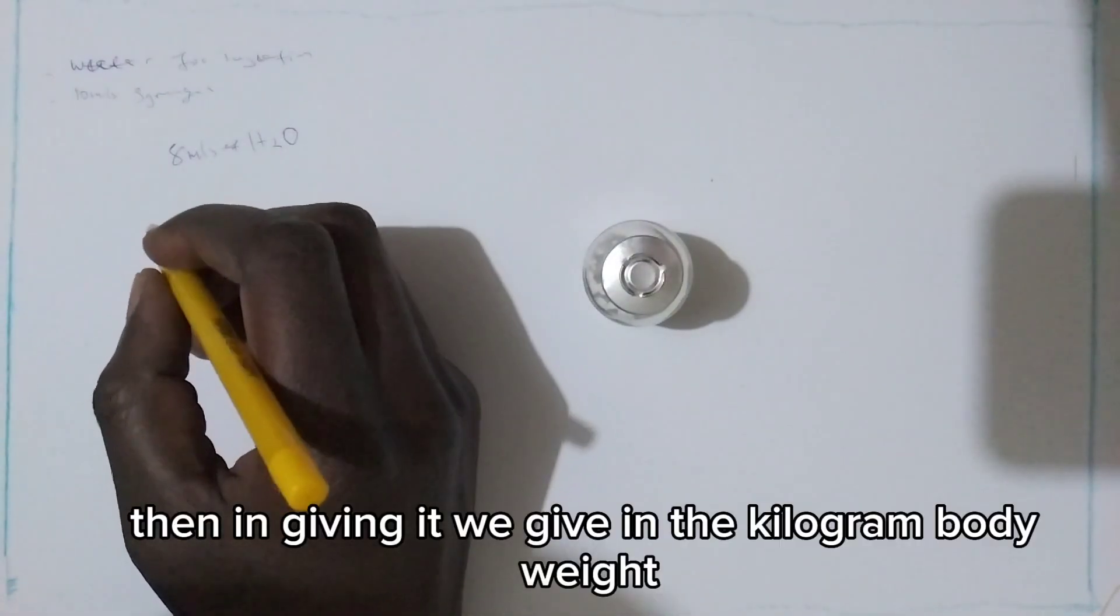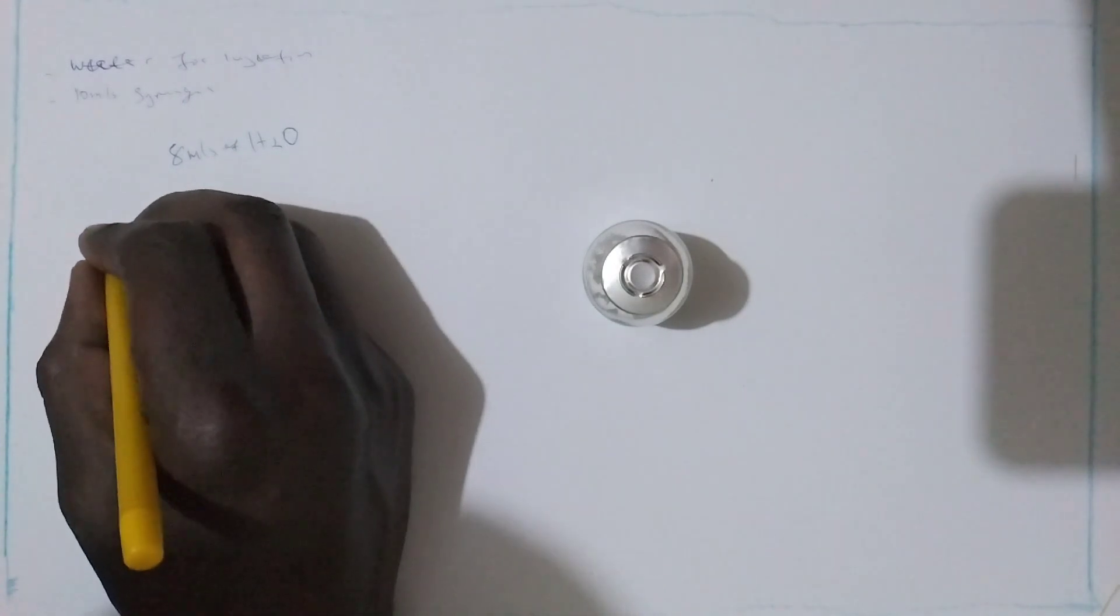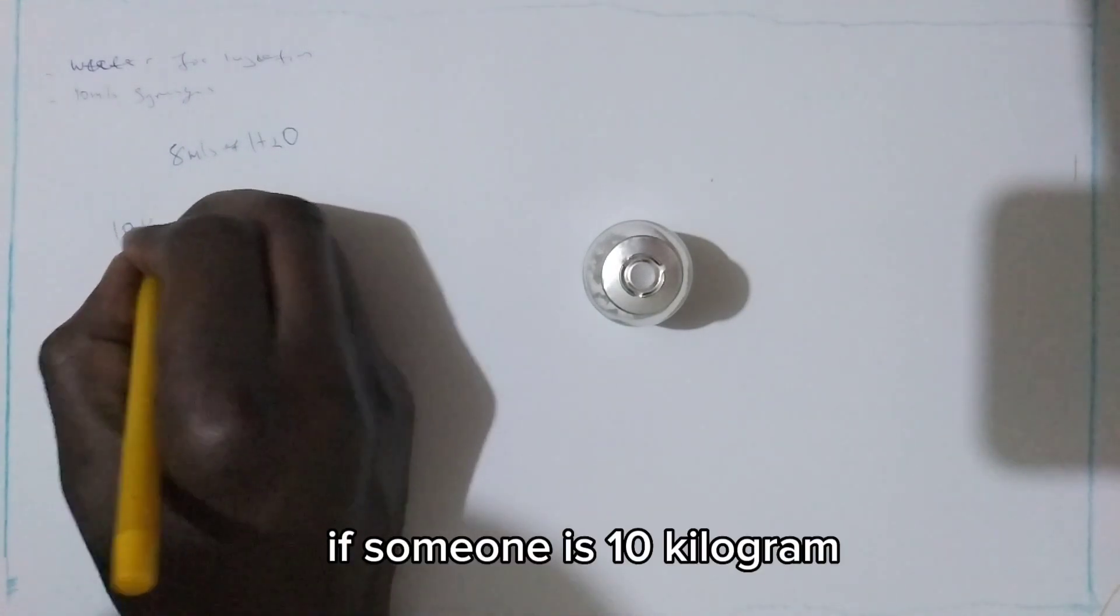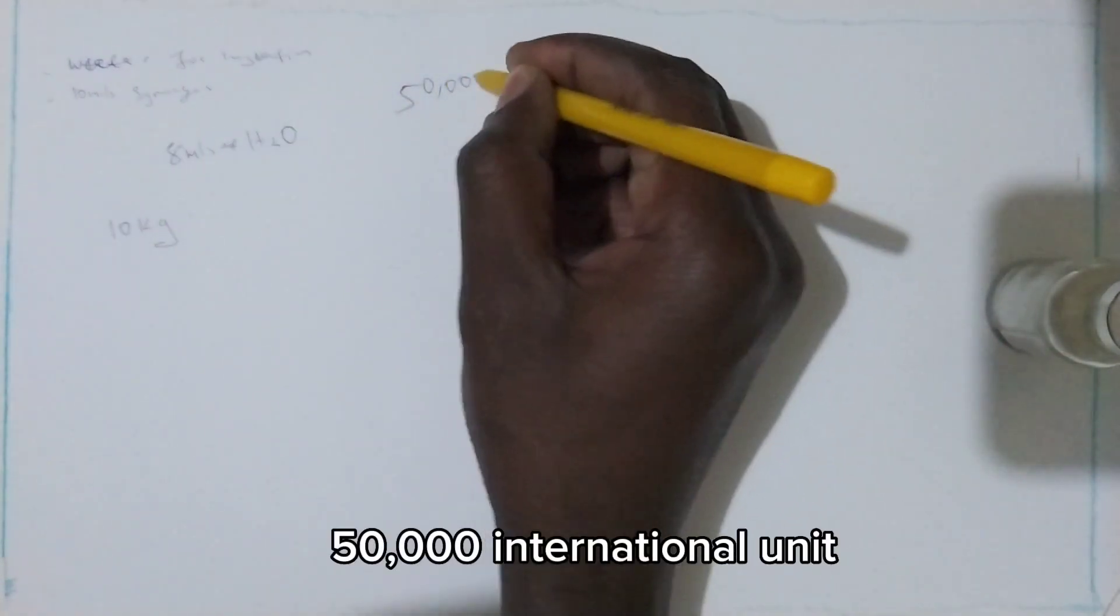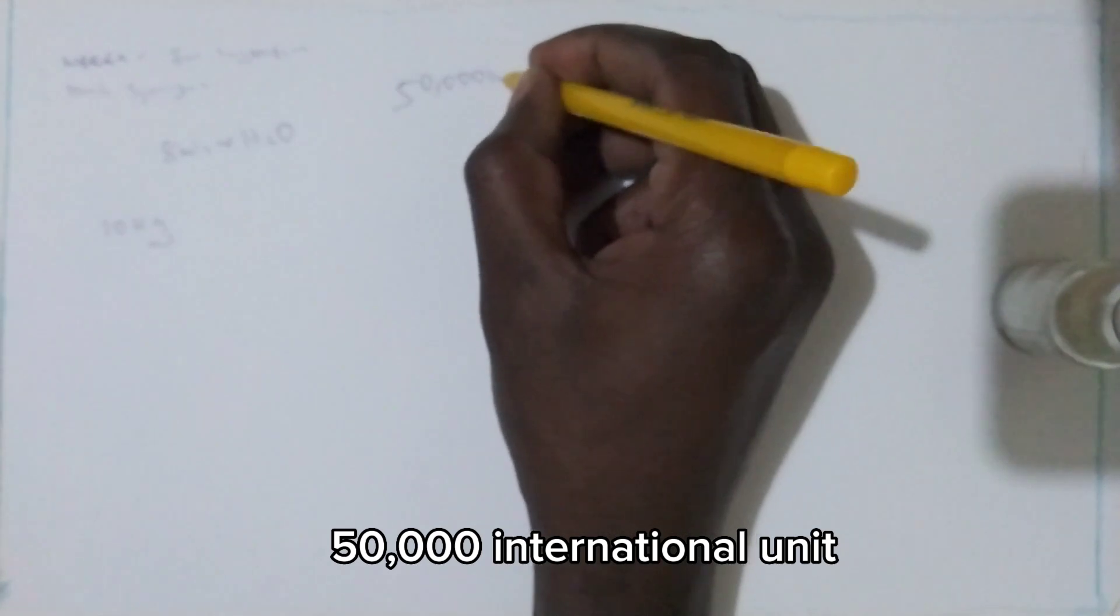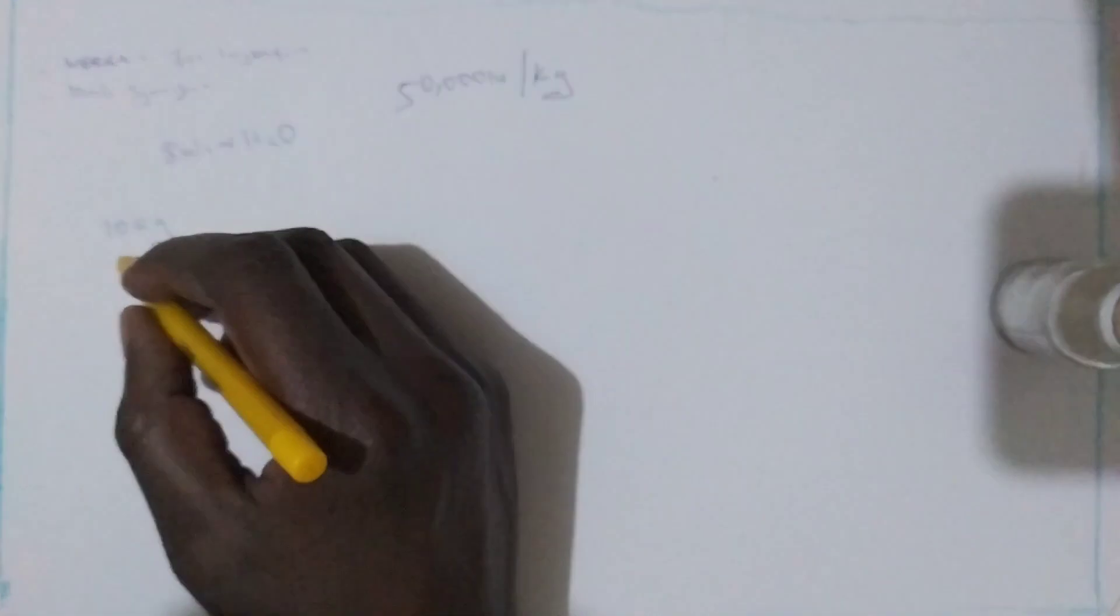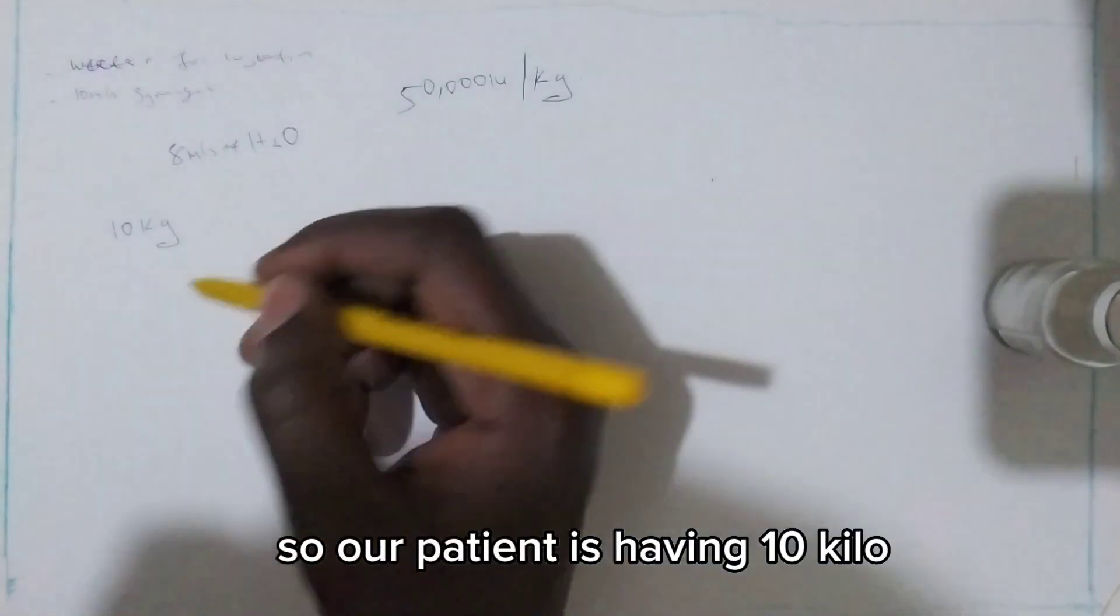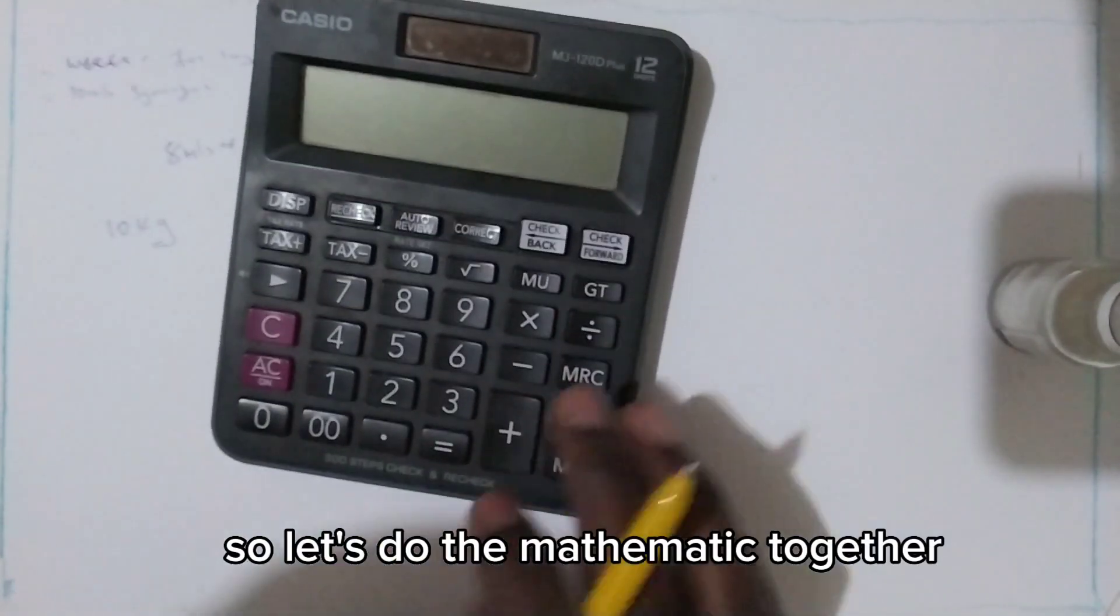Then in giving it, we give in the per kilogram body weight. If someone is 10 kg, we give 50,000 international units per kilogram body weight. So our patient is having 10 kg. Let's do the mathematics together.